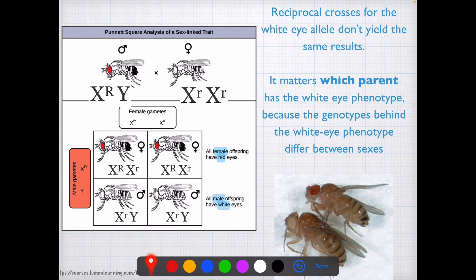So why is it that all the females have red eyes and all the males have white eyes? Well, oftentimes we're going to see that in sex-linked genes, the males are more likely to have a recessive phenotype. And that is because males are missing a lot of the genes because they have one X chromosome and one Y chromosome.